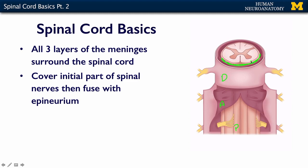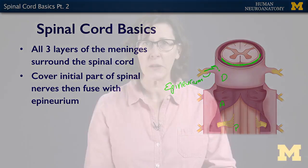The dura fuses with the spinal nerves, and eventually the nerves are going to be covered by something called epineurium, which is a connective tissue layer that helps the nerves maintain their integrity and keeps them from getting squished or pulled too hard. The initial part of that spinal nerve is actually covered by the dura mater itself. In the next couple of slides we will see some actual cadaveric images of these layers around the spinal cord within the vertebral column.